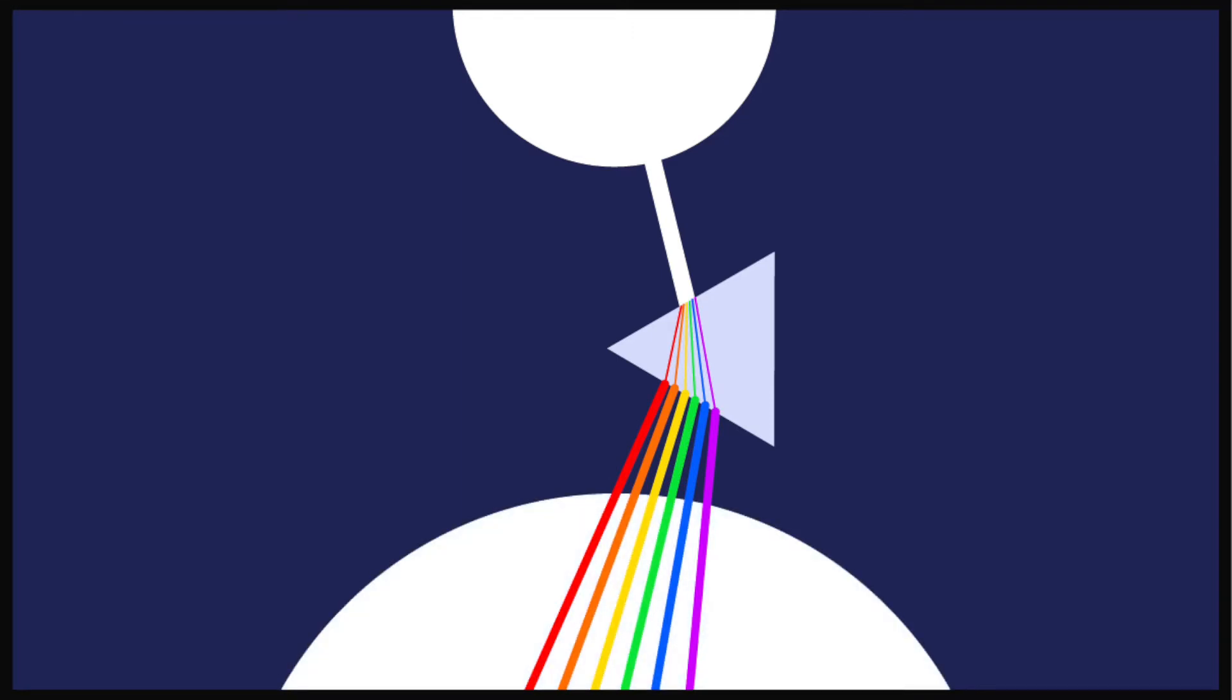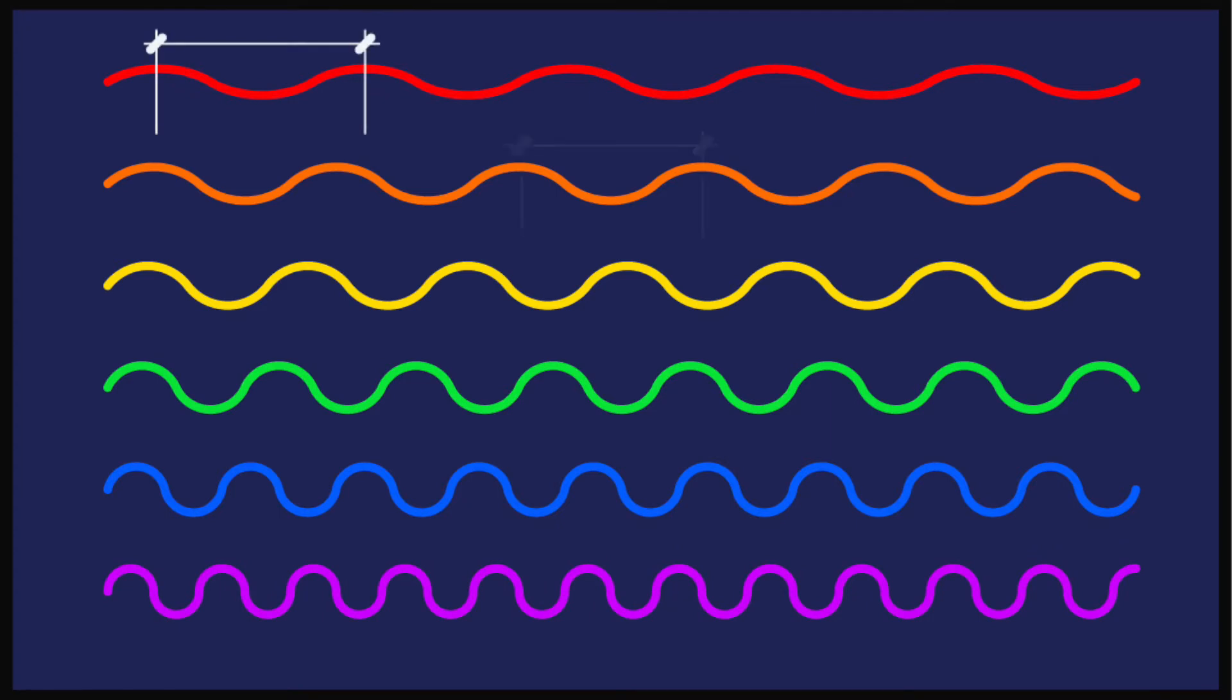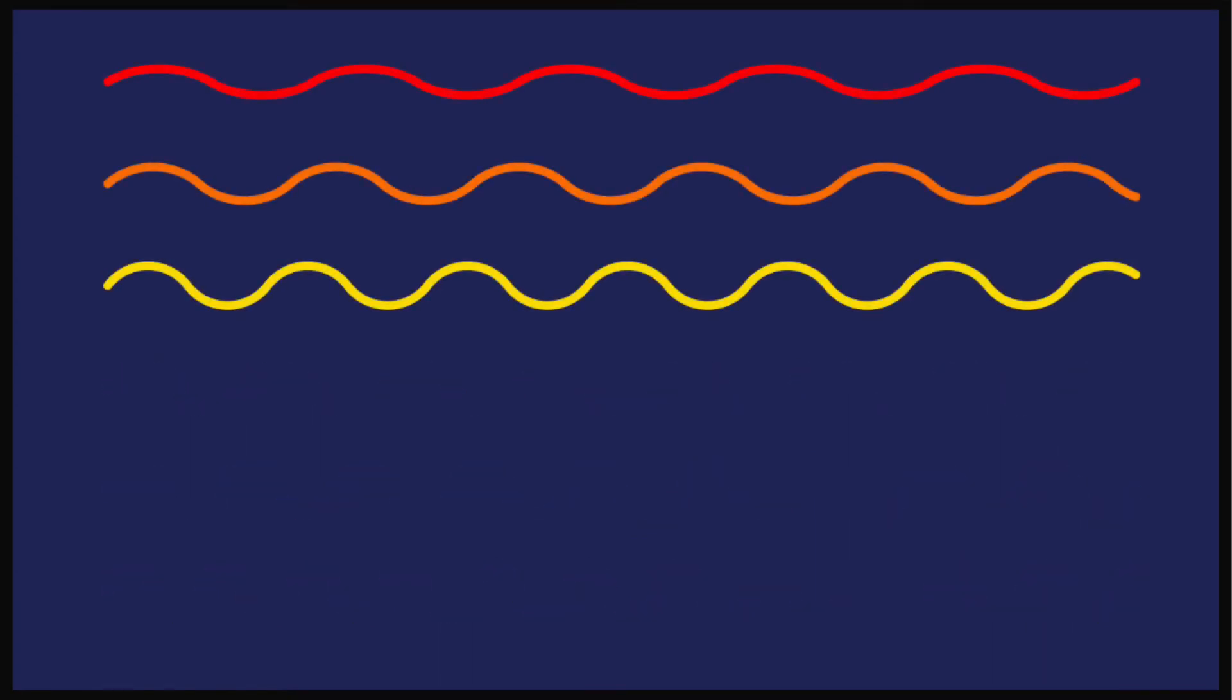All of these colors have different wavelengths, and each is a different size. Wavelengths are like waves of water, each color having a shorter or longer distance between the peaks of each wave. Colors like blue, violet, and green have shorter wavelengths, while red, yellow, and orange have longer ones.